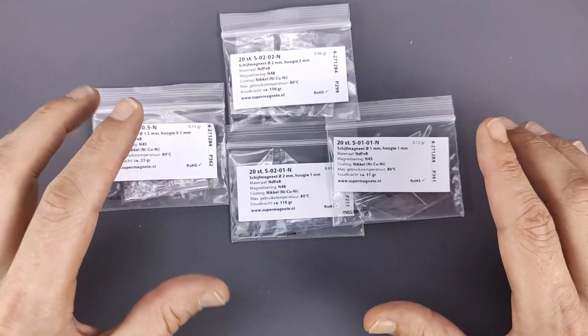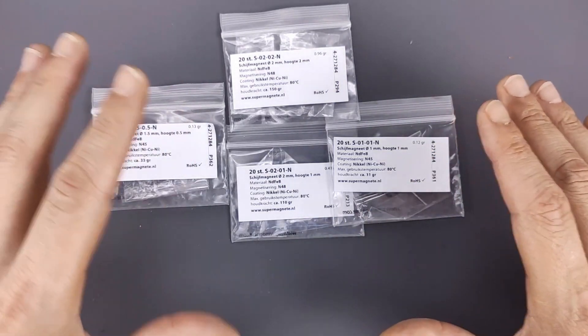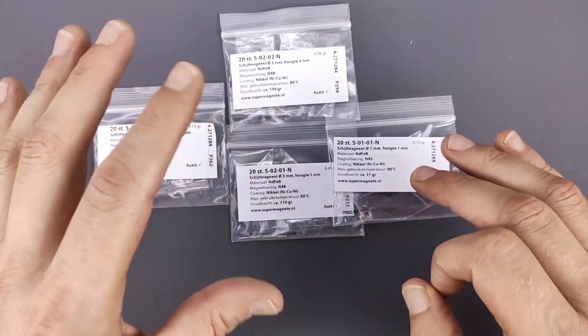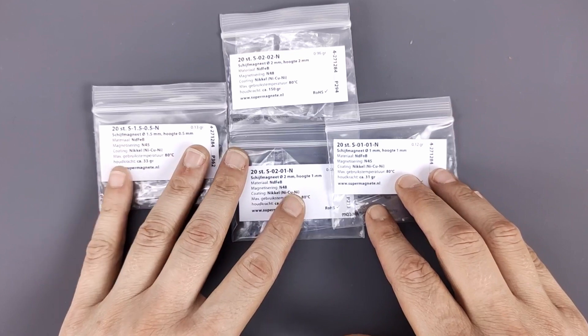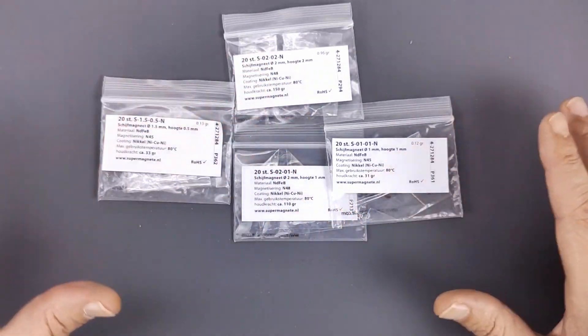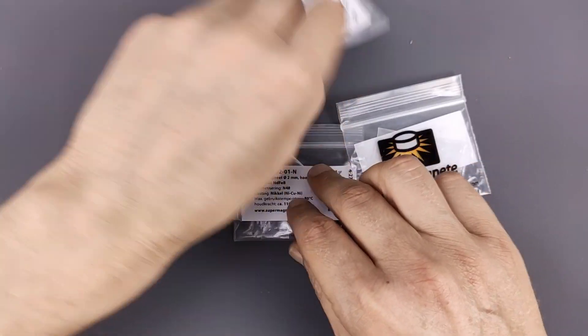And this one is two millimeters in diameter and two millimeters in height. Now I wanted a few different sizes of magnets because different sizes of magnets have different sizes of magnetic flux density. And there's calculations you can do, but I wanted to see in practice what it actually meant.